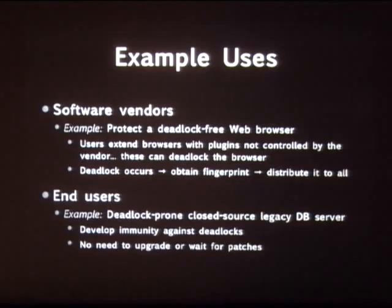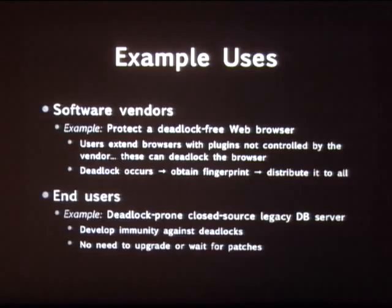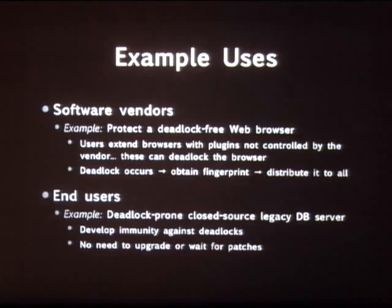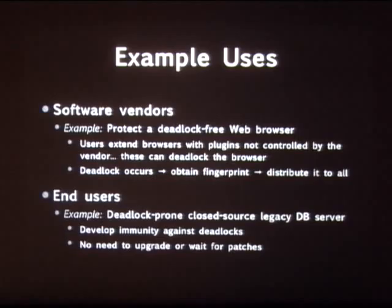An example use case: you're running a legacy database server that is deadlock-prone, hanging every week or month, and you're a cash-strapped internet startup that doesn't want to pay to upgrade to the next version which the vendor promises has no deadlocks. You could just take DEMUNIX and use it to defend against the two or three deadlocks that occur every now and then. DEMUNIX is very good for rare events which do not warrant the effort to actually fix them.